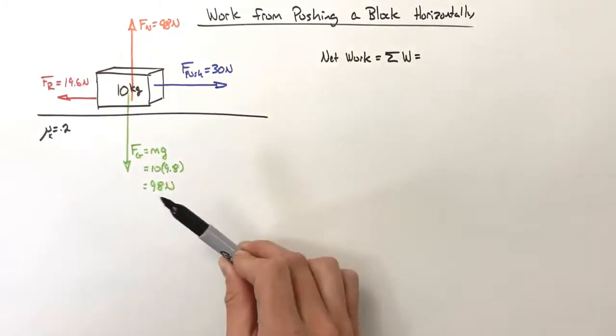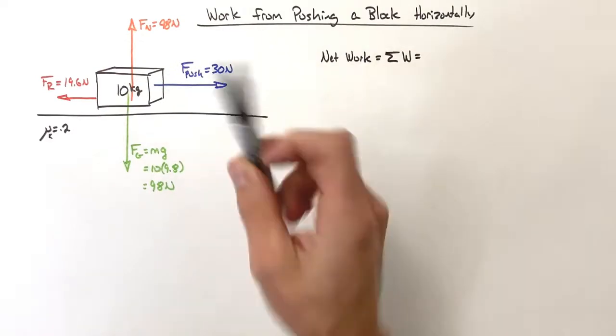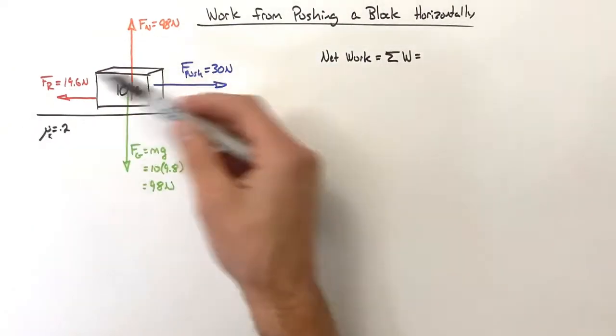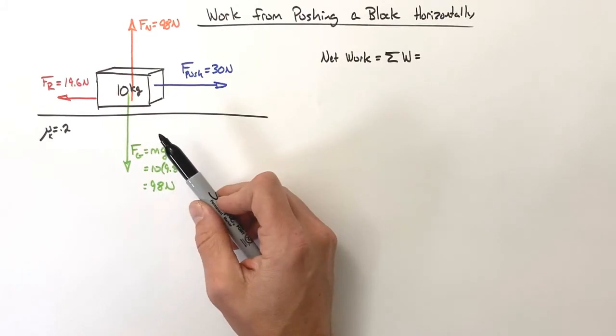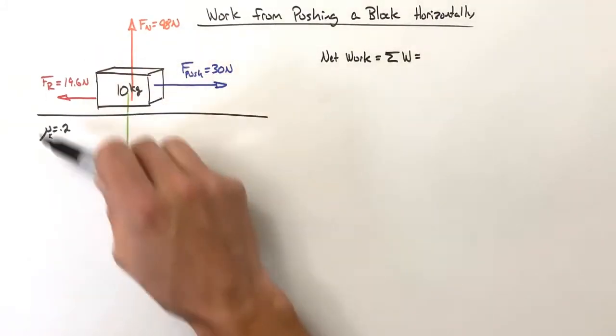So on this free body diagram we actually have not just the push force forward, but we also have the normal force, gravity, and the friction force. Now I'm not going to get into where these forces come from and how to calculate these—that's going back to the last unit when we were talking about force, so these values we're just going to take.